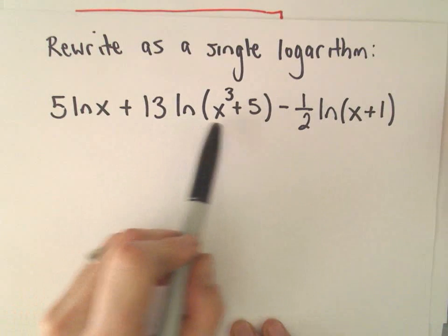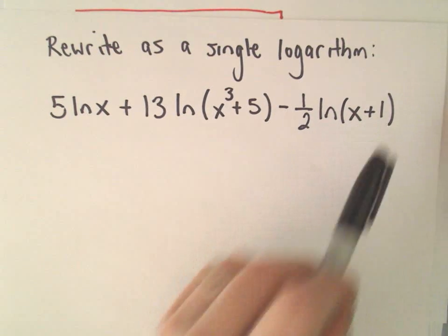5 ln of x plus 13 ln of x cubed plus 5 minus 1 half ln of x plus 1.